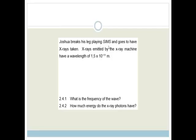Moving on. It says Joshua breaks his leg playing Sims and goes to have X-rays taken. X-rays emitted by the X-ray machine have a wavelength of 1.5 times 10 to the minus 11 meters. It asks, what is the frequency? So we've just said that C is equal to lambda F. The velocity of all electromagnetic waves is 3 times by 10 to the 8 meters per second. We've been given the wavelength, 1.5 times 10 to the minus 11, and they want the frequency.